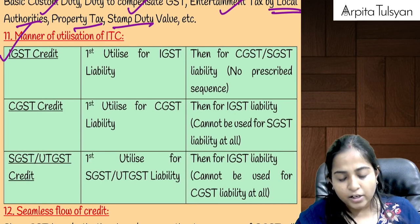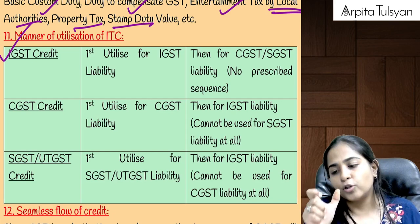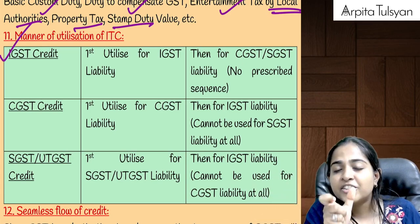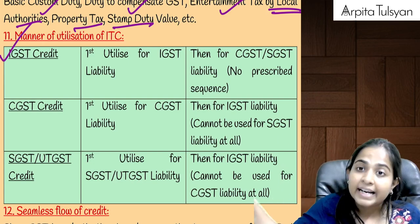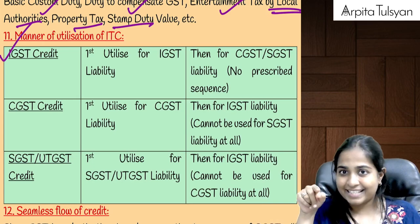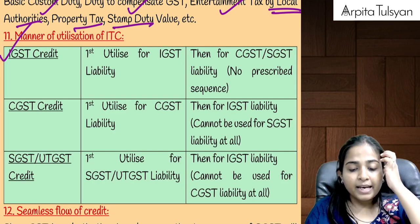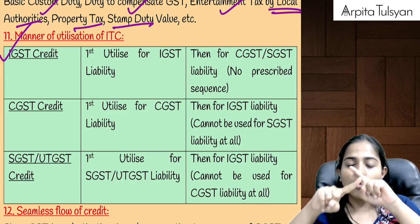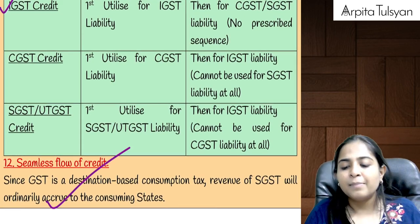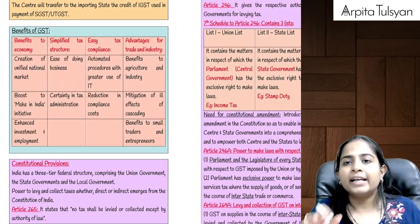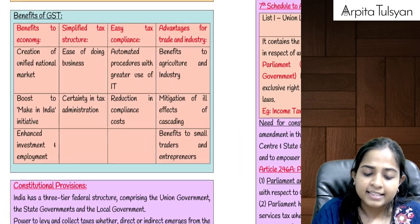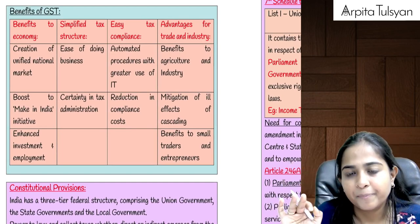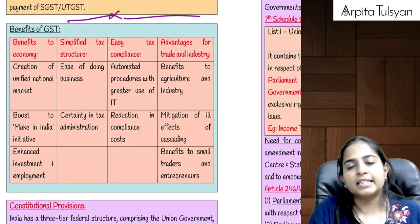We already studied the manner of utilization of ITC. If you have got IGST credit available, use it first against IGST liability, then against CGST or SGST — no sequence. If you have got CGST credit, first use it against CGST liability, then against IGST, but not against SGST liability. And for seamless flow of credit, we had done full numerical questions for interstate and intrastate — finally the revenue should go to that government where the goods are going to land up. Till here, all features and framework of GST are completed.